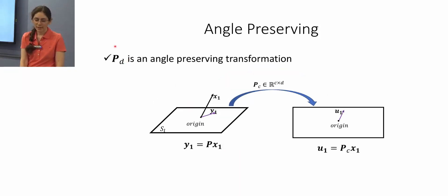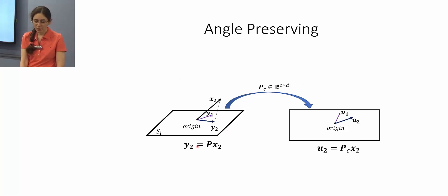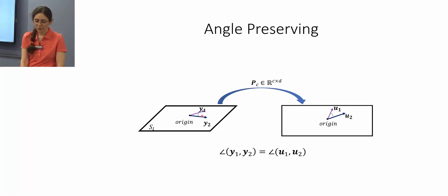It can also be proved that Pd is an angle-preserving transformation. If we create capsule y1 by applying P on x1 and corresponding u1 by applying Pc on x1, and similarly y2 and u2 from x2, the angle between y1 and y2 equals the angle between u1 and u2.